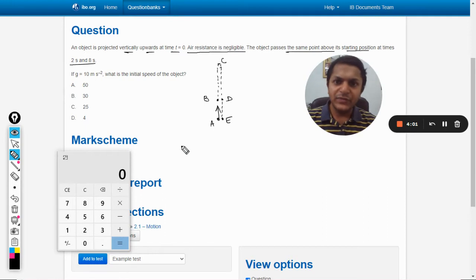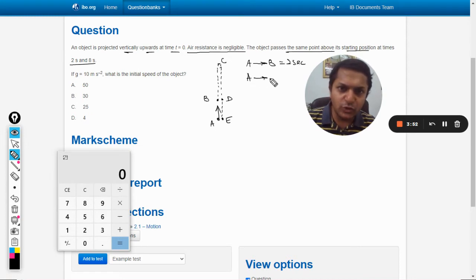Now it is saying that the body has taken two seconds when it is moving from A to B, and when it is moving from A to D the body has taken eight seconds and it has achieved the same horizontal position. That is, B and D they are at the same horizontal position.